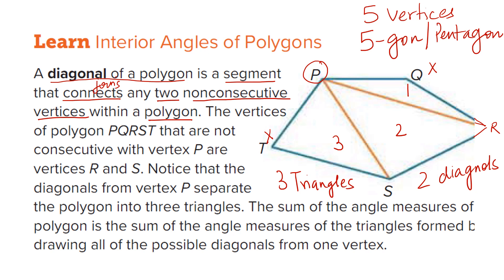Now the vertices of polygon P, Q, R, S, T that are not consecutive with the vertex P are R and S. We have already seen that. Notice that the diagonals from the vertex P separate the polygon into 3 triangles. So 1, 2, 3, 3 triangles. Now the sum of the angle measures of the polygon is the sum of the angle measures of the triangle. So 1 triangle is 180 degrees, second triangle is again 180 degrees and the third triangle is again 180 degrees.